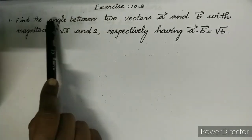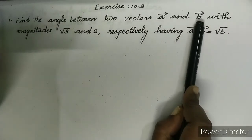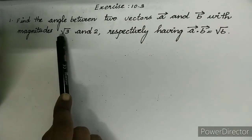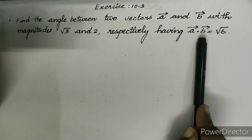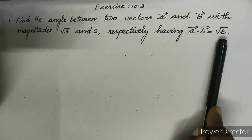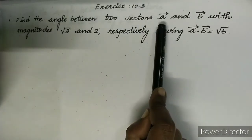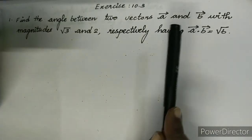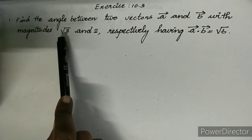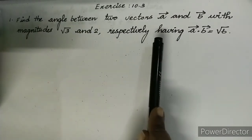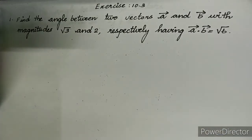Question number 1: Find the angle between two vectors A and B with magnitudes √3 and 2 respectively, having A·B = √6. We are given |A| = √3, |B| = 2, and A·B = √6.